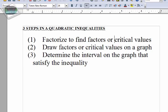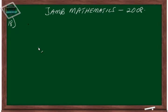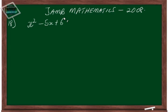So let us start by writing out the quadratic inequality that we have to solve, which is x squared minus five x plus six is greater than or equal to zero. The first step we have is to factorize.